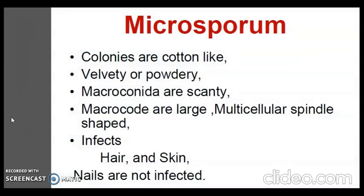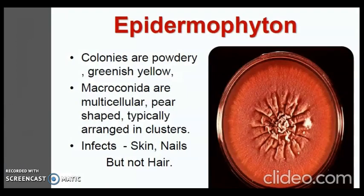Microsporum colonies are cotton-like, velvety or powdery with white to brown pigmentation. Microconidia are relatively scanty and not distinctive, whereas macroconidia are the predominant spore form — large, multicellular, spindle-shaped structures borne singly on hyphae. Microsporum species infect hair and skin but usually not nails. Epidermophyton colonies are powdery and greenish-yellow. Microconidia are absent; macroconidia are multicellular, pear-shaped and typically arranged in clusters. Epidermophyton attacks skin and nails but not hair, and includes the species Epidermophyton floccosum.